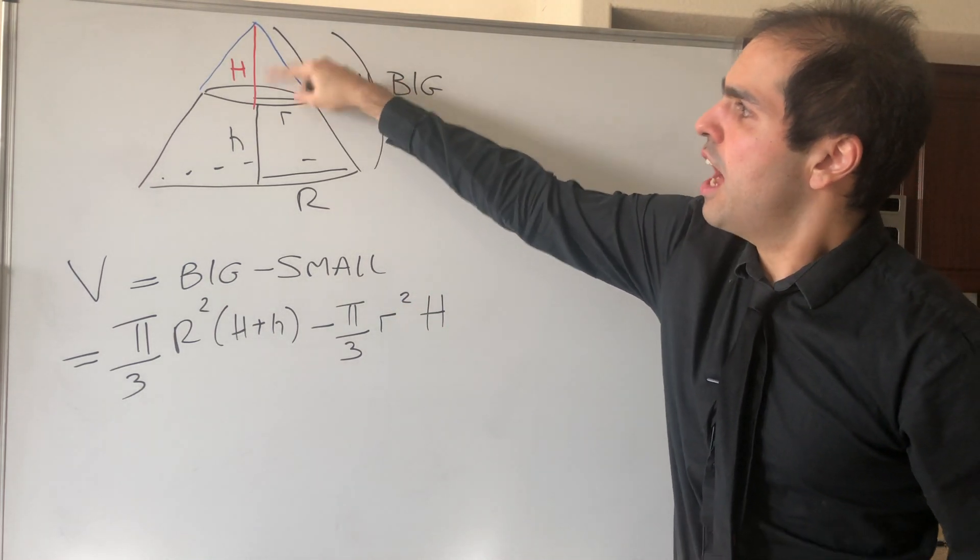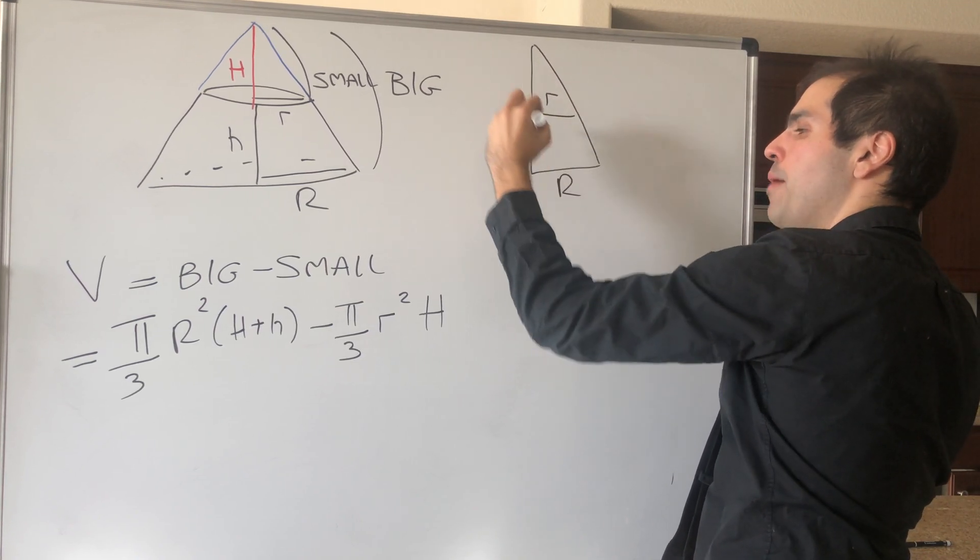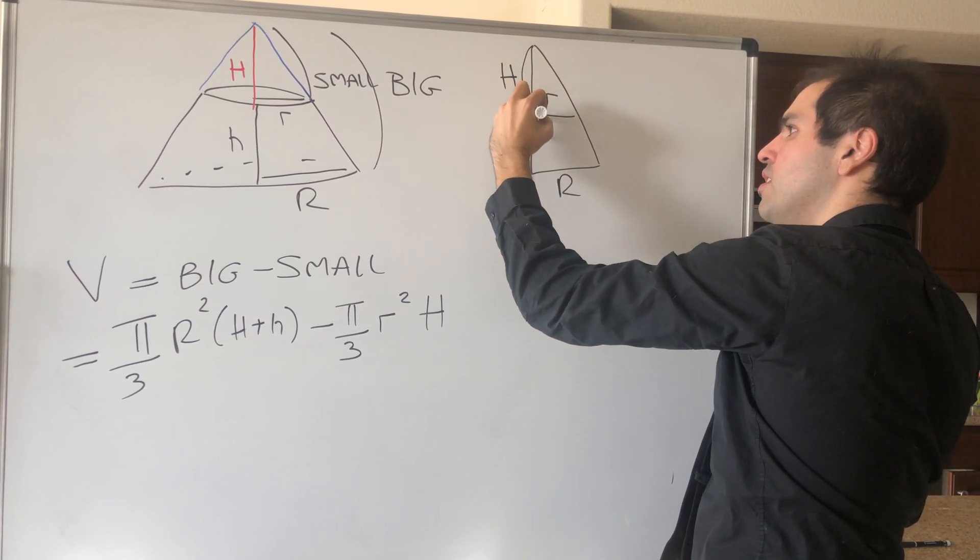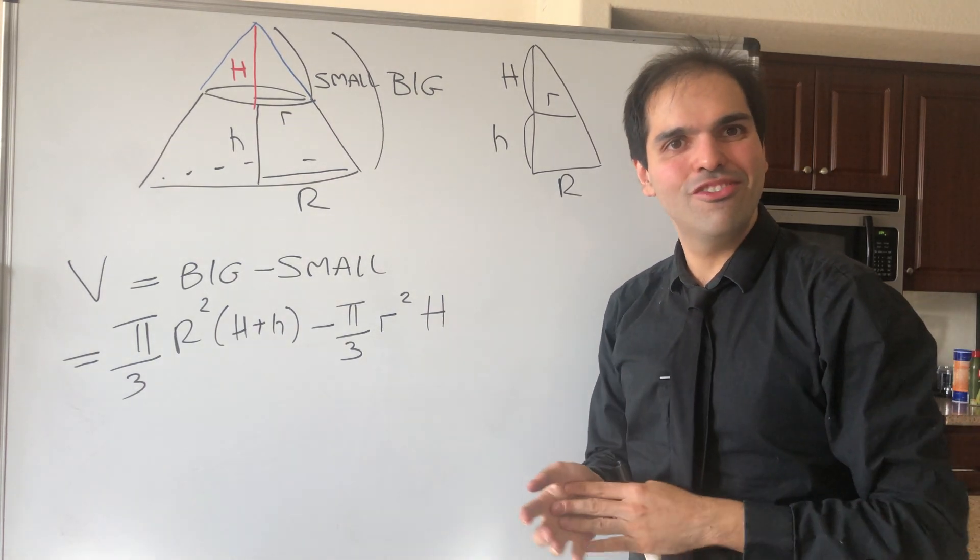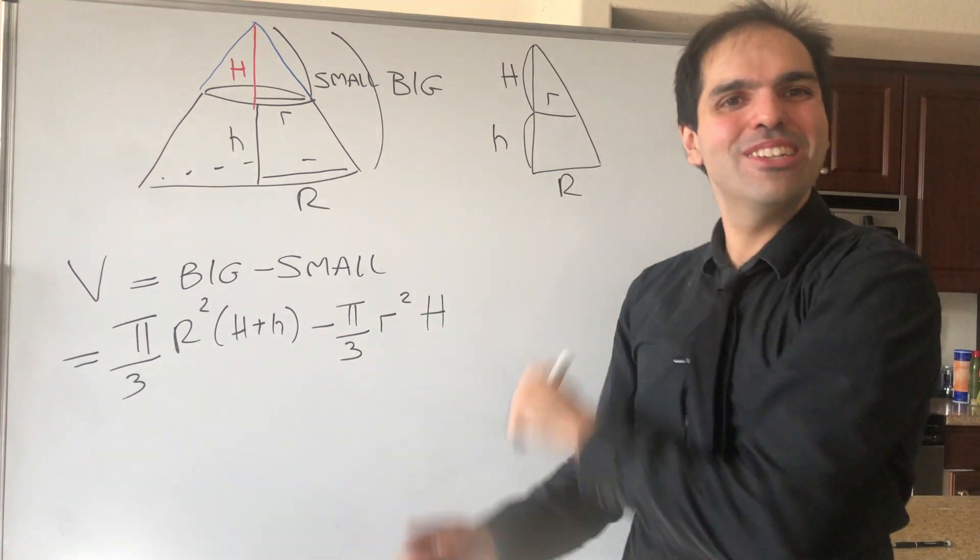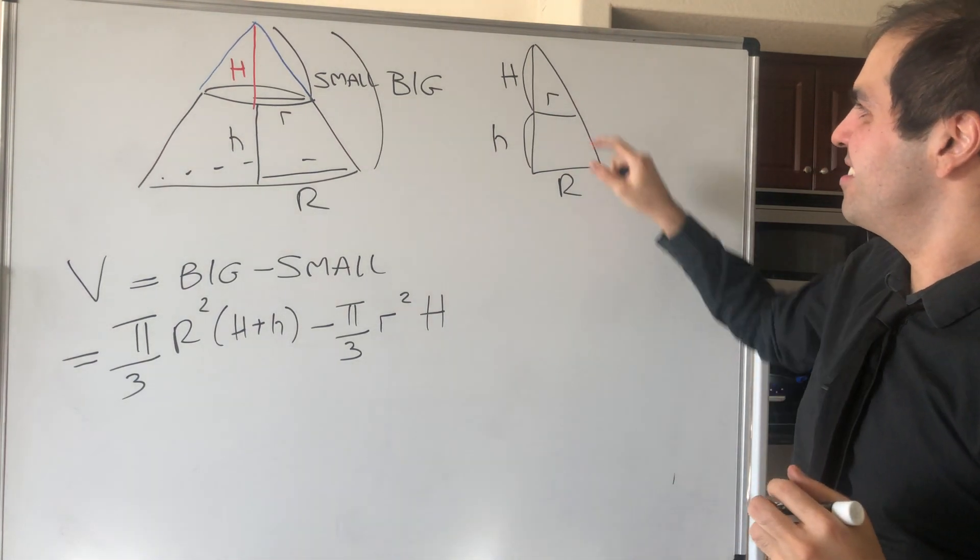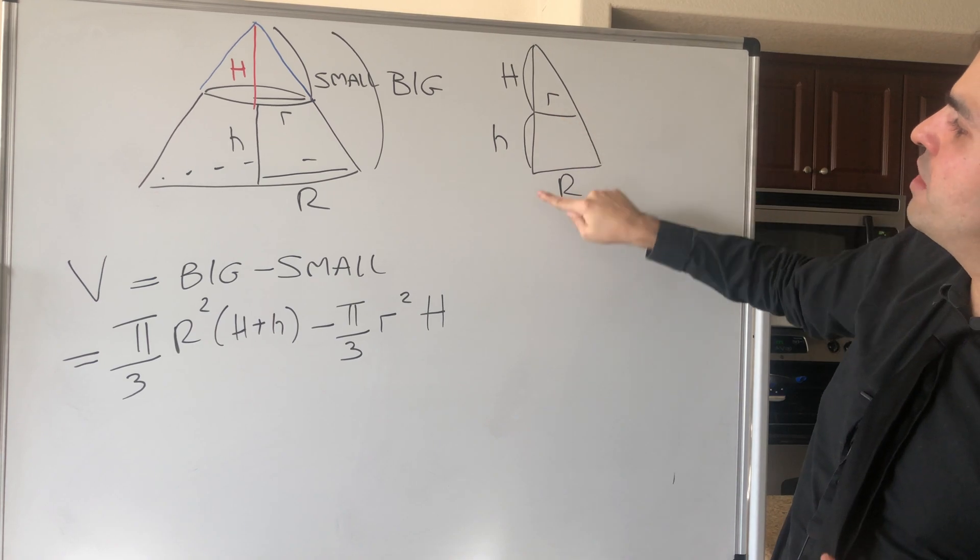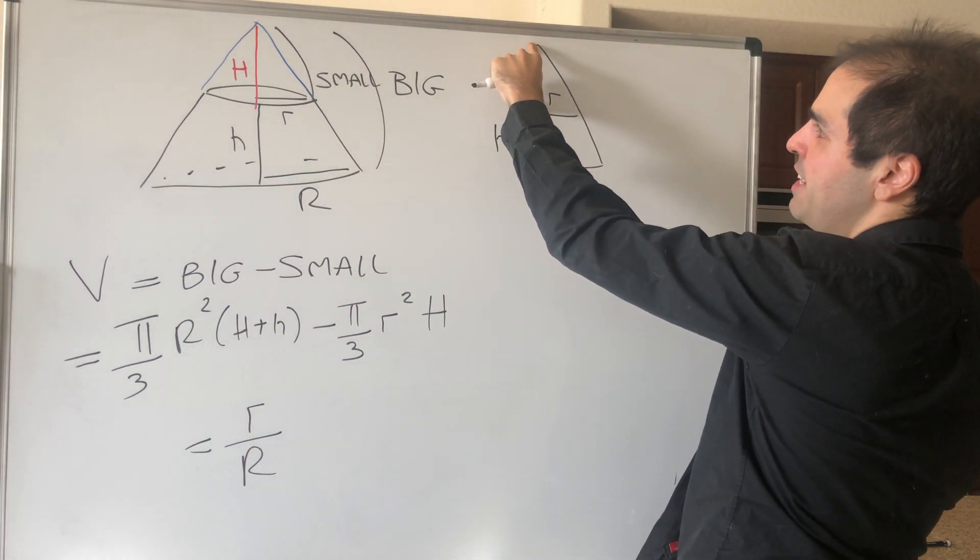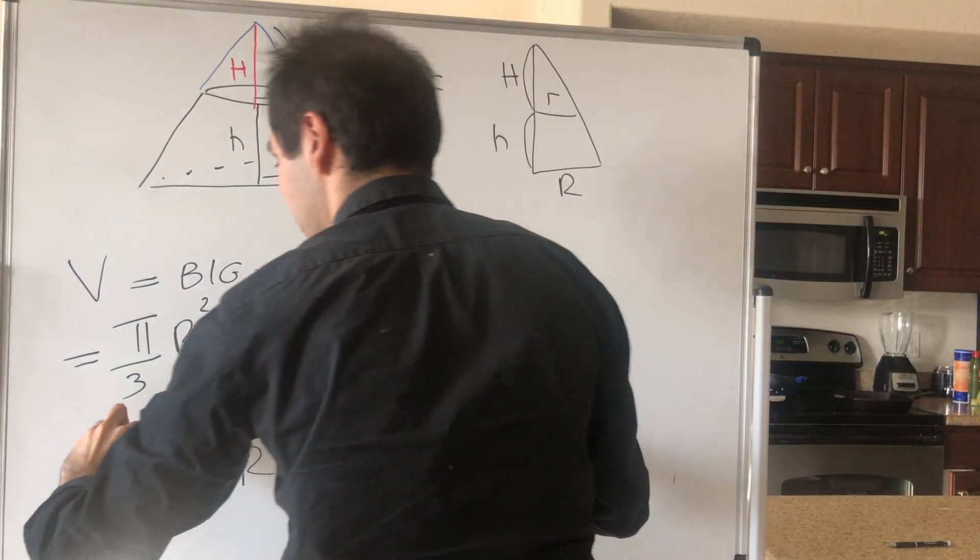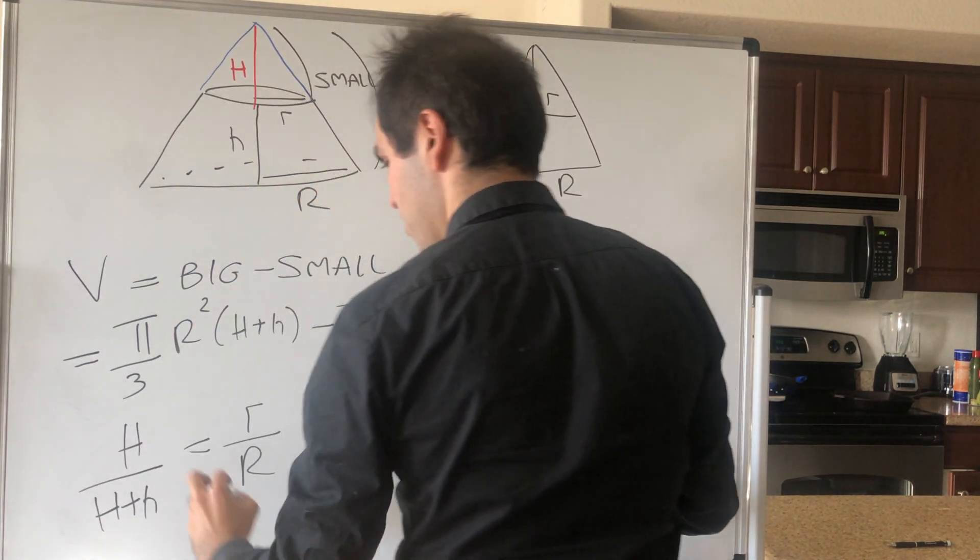And now, the question is, how do we find this height? Well, if you look more closely at this triangle, this is little r, this is capital R, this is capital H, this is little h. Well, it should remind you of the law of similar triangles, or as they call it in French schools, théorème de Thalès, which gives me a bit of PTSD from 9th grade, but still. So what does this théorème de Thalès say? It says that if you take the ratio of this side and this side, so little r over capital R, it's the same as taking the ratio of this side over the whole big side. So capital H over (capital H plus little h).